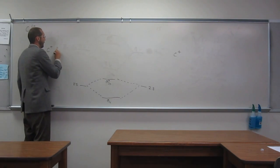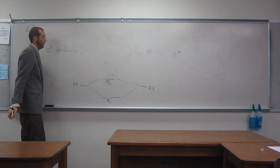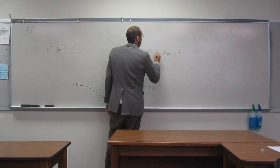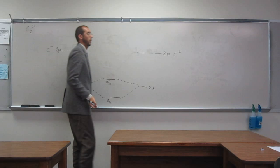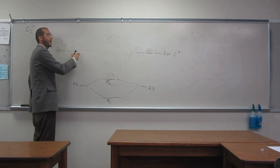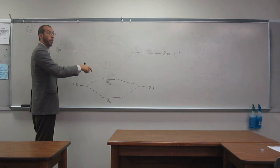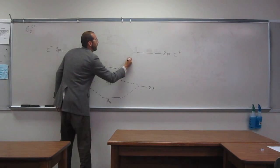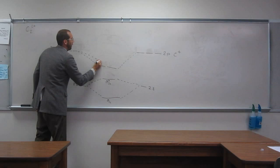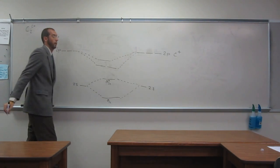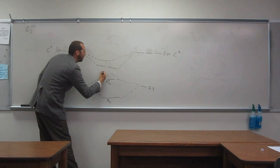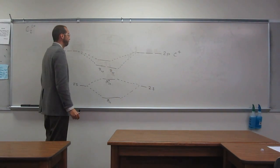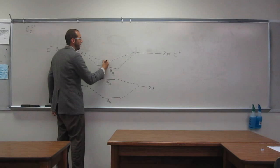Okay, up here we're going to have the 2p orbitals, 1, 2, 3. So remember, in this case, the pi orbitals are filled first, okay? So down here, we're going to have the 2p orbitals, and then the sigma orbital, like that. Okay, so this is called pi 2p, and this is also a pi 2p, and this is sigma 2p.